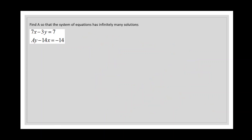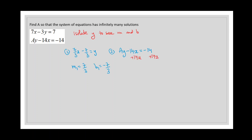Let's try another type: find 'a' so that the system of equations has infinitely many solutions. The first equation is the same as before, so the isolation steps are the same. For equation number two, which is slightly different, we add 14x to both sides to get y isolated, then divide everything by 'a' to remove the coefficient on y. The coefficient on x becomes our slope and the term without x is our y-intercept.